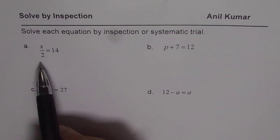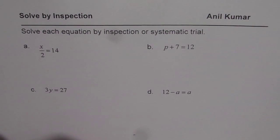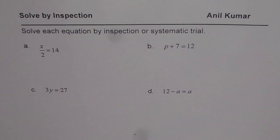The first one is x divided by 2 equals 14. The second one is p plus 7 equals 12. Then 3 times y equals 27, and 12 minus a equals a. Now that could be difficult. Let us see how to solve them.